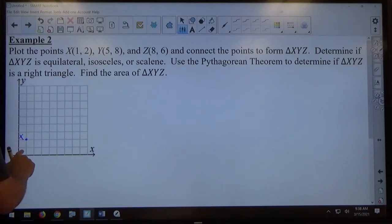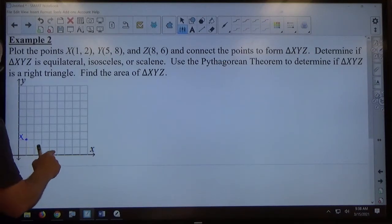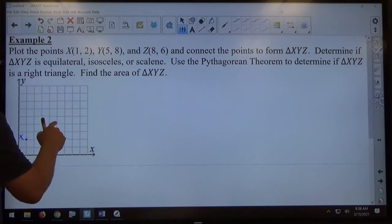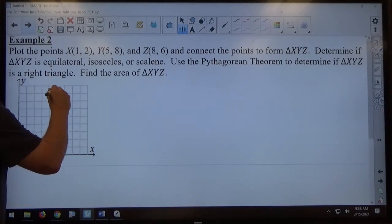Point Y is 5 right, 8 up. 1, 2, 3, 4, 5, and 1, 2, 3, 4, 5, 6, 7, 8. That's point Y.